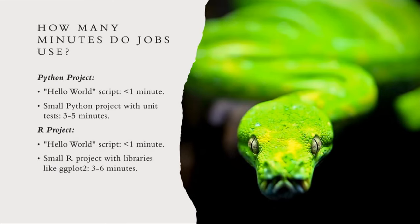This is an estimate of how many minutes each job uses. For a Python project, a Hello World script takes less than a minute, while a small Python project takes about three to five minutes. For an R project, similarly a Hello World takes less than a minute, but a small R project takes about three to six minutes because libraries like ggplot2 may take more time to load up.